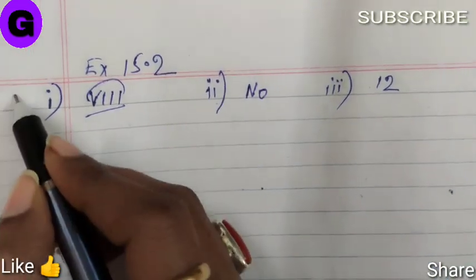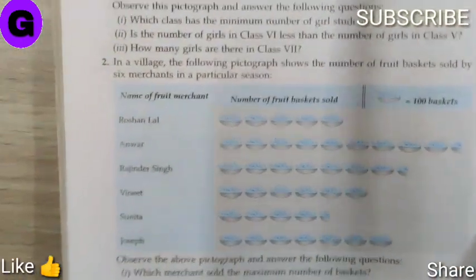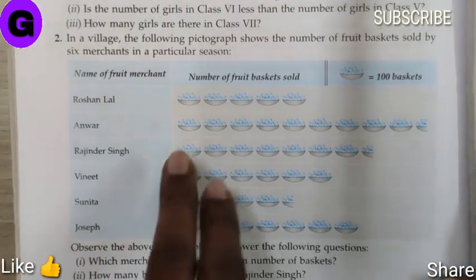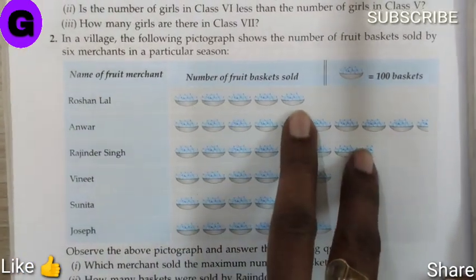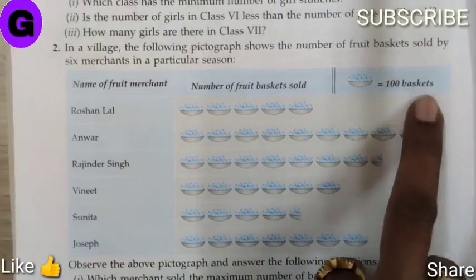Now question number 2, part 1. Let us look at the pictograph given here. The names of fruit merchants are given and fruit baskets are drawn. The key is 1 basket equals 100 baskets.